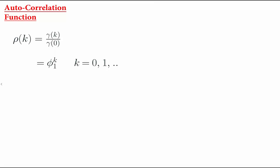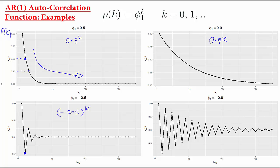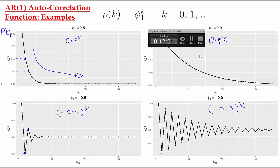We can then plot some examples for particular AR1 coefficients. If φ1 = 0.5, the correlation is 0.5^k, dying away toward zero fairly quickly. If φ1 = 0.9, the correlations are still positive but decay more slowly. For φ1 = −0.5, we get an oscillating pattern in the correlations, and for φ1 = −0.9 the oscillating pattern decays more slowly. These plots show the range of correlation patterns that an AR1 process can produce, giving an overall recap of the properties of an AR1.